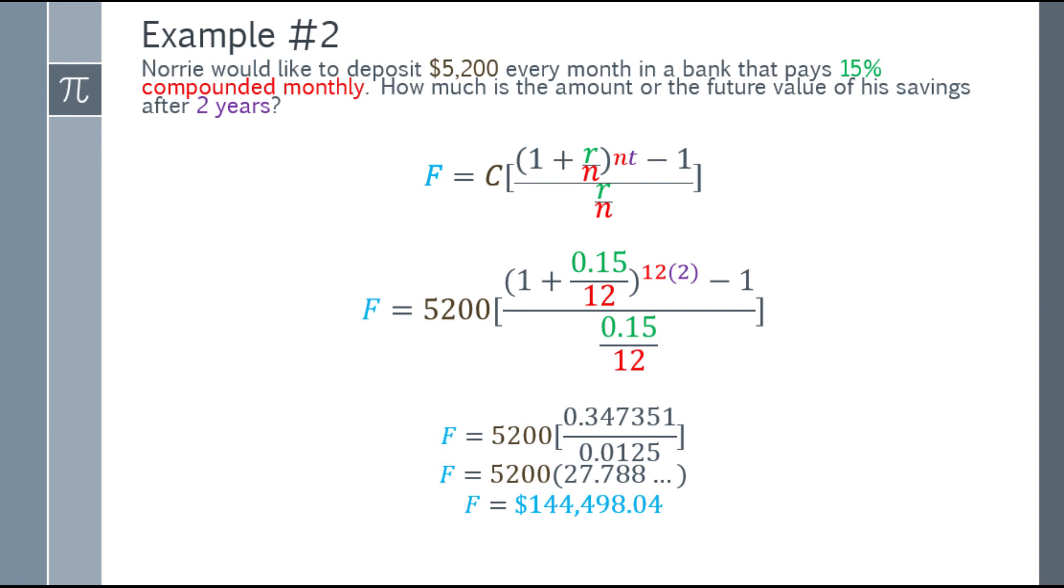So if Nori pays 5,200 every month to a bank that pays 15% compounded monthly, after 2 years he will have $144,498.04.